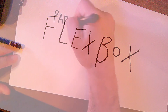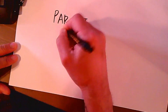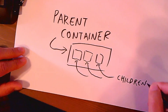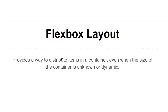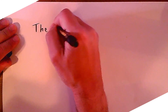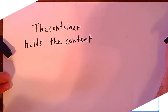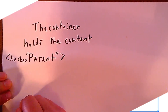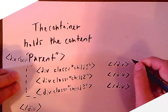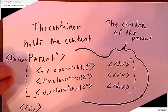Flexbox is a means to fully organize elements. The way it works is you have a parent container and children. The parent container uses a property called display with the value of flex. It's basically a way to distribute items. You'll hear the term container a lot when talking about Flexbox — it's also used in Bootstrap — where the container holds the content and the children are the items inside.